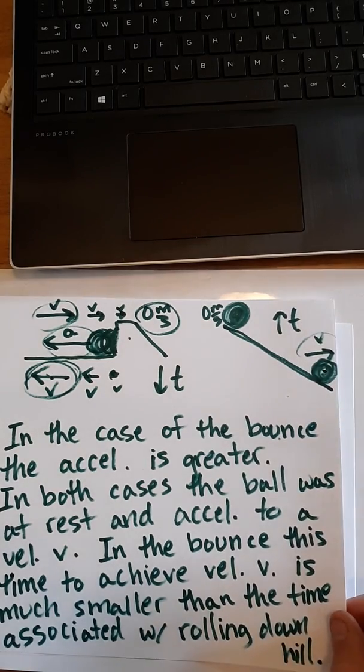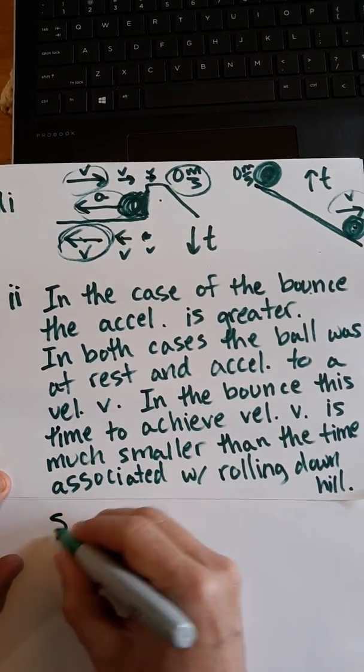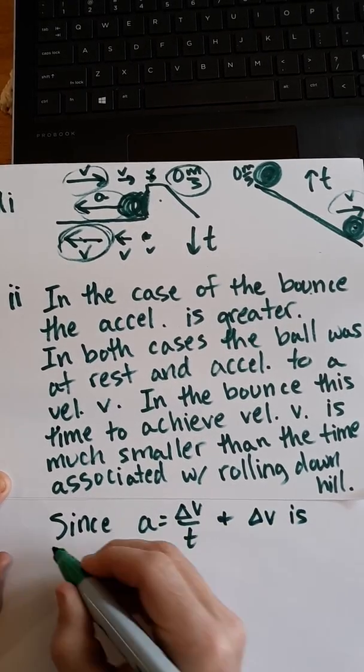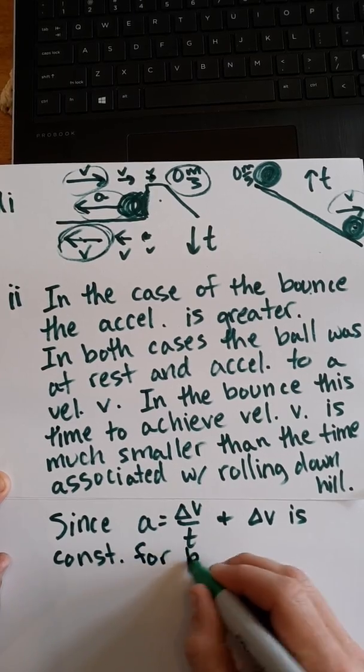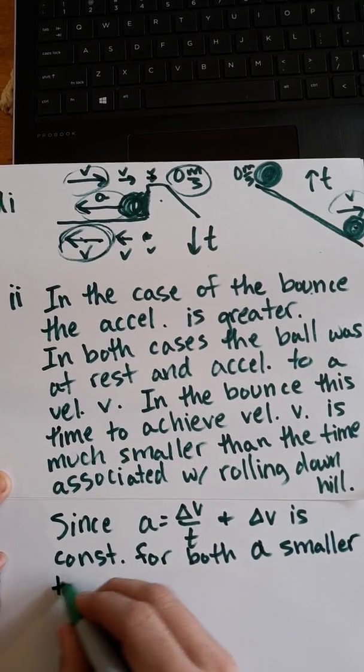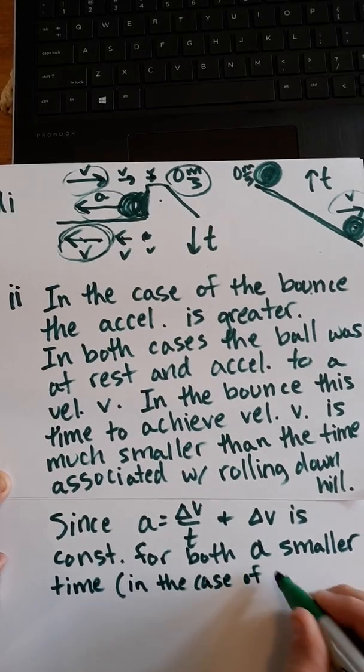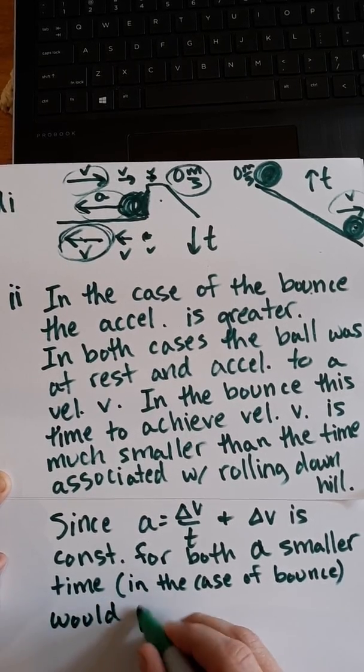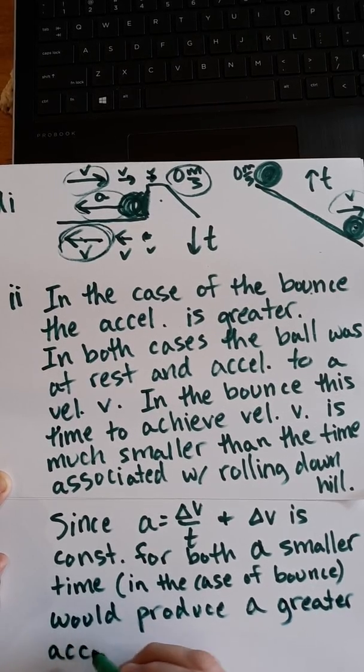Okay, and that's pretty good right there, but we want to finish it off with a nice little equation flourish. So we're going to say here a equals delta V over T and delta V is constant for both. They both achieve the same velocity from rest. A smaller T in the case of the bounce would produce a greater acceleration solution.